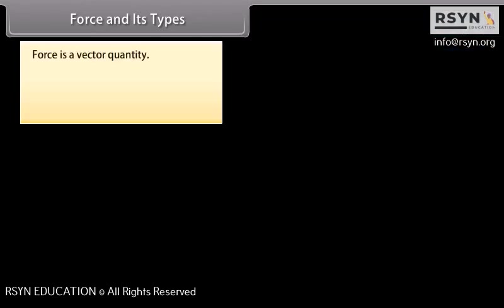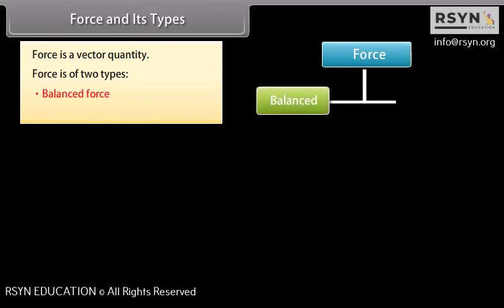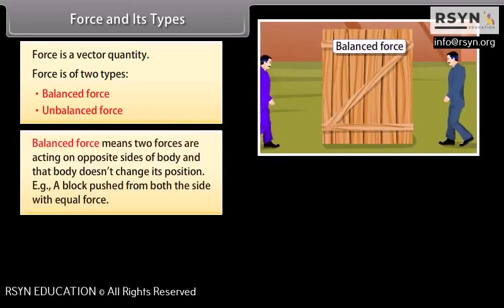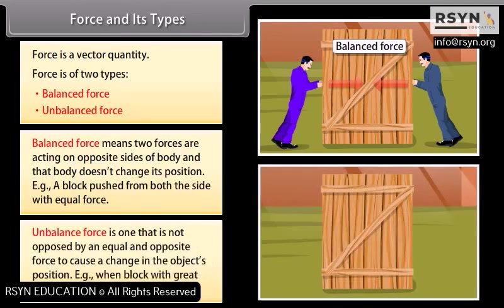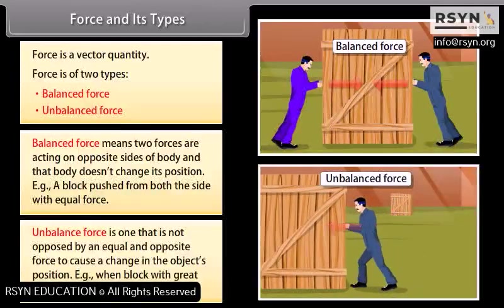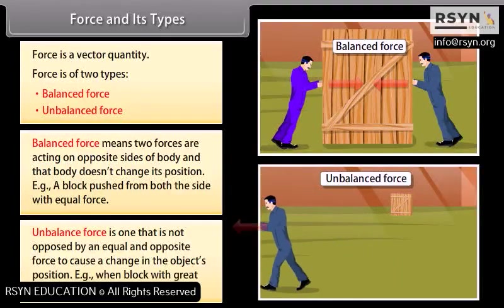Force is a vector quantity. Force is of two types: balanced and unbalanced. Balanced force means two forces are acting on opposite sides of the body and that body does not change its position. Example: a block pushed from both sides with equal force. Unbalanced force is one that is not opposed by an equal and opposite force to cause a change in the object's position.